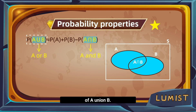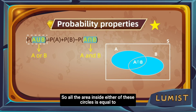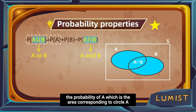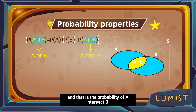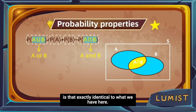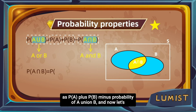So we calculate: the probability of A union B equals the probability of A plus the probability of B minus the probability of A intersect B. We subtract the center part that we counted twice. From this we can also derive that the probability of A intersect B equals P(A) plus P(B) minus the probability of A union B.